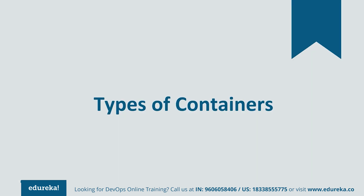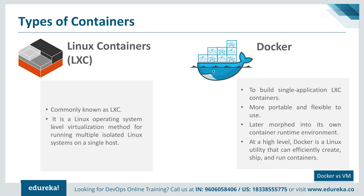There are mainly two different types of containers: Linux containers and Docker containers. The Linux container is a Linux OS-level virtualization method for running multiple isolated Linux systems on a single host. Docker started as a project to build single-application Linux containers, introducing changes that make containers more portable and flexible. At a high level, Docker is a Linux utility that can efficiently create, ship, and run containers.